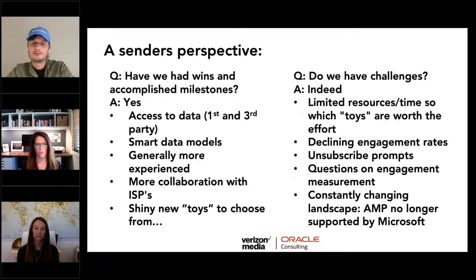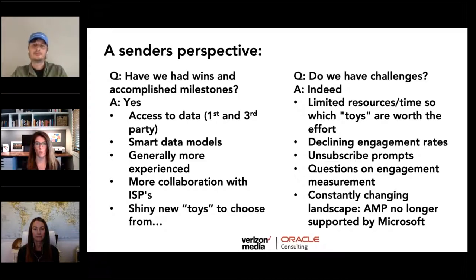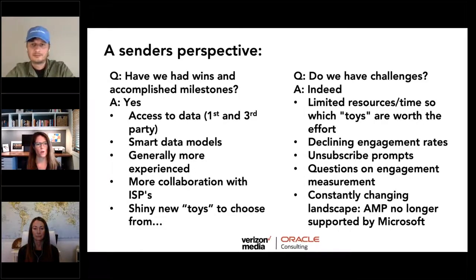ISPs are talking and thinking like marketers more than ever before, and we have some exciting developments as a result. Senders have had wins and challenges. We have more access to valuable data than ever before — first and third party data to build a better picture. We've evolved in smarter data models and are more sophisticated in creating deliverability stability. There's been a broad spectrum of knowledge with email deliverability, but most senders have experienced a dire deliverability issue that grabbed leadership's attention.